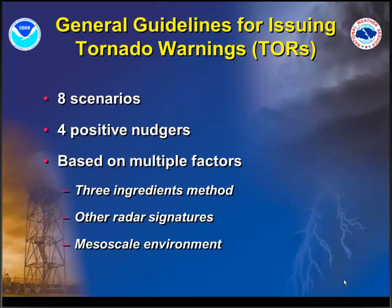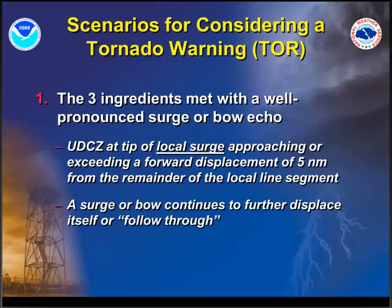When it comes to our general guidelines for issuing a tornado warning, we've broken it down to eight possible scenarios to consider, plus four possible positive nudgers. These are based on multiple factors — the three ingredients method as a baseline — plus other radar signatures and mesoscale environmental parameters. Scenario number one: three ingredients are met with a well-pronounced surge or bow echo. Surges and bow echoes can greatly vary in size. For the smallest localized surge, we're looking for it to displace itself at least five nautical miles from the remainder of the localized line segment. If you're looking at a larger surge or bow echo, is that thing accelerating or following through?